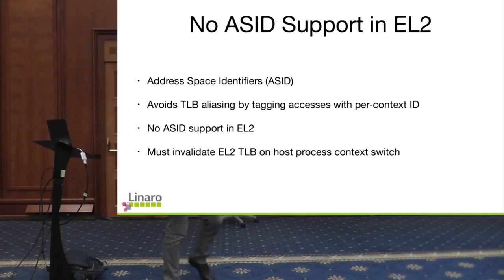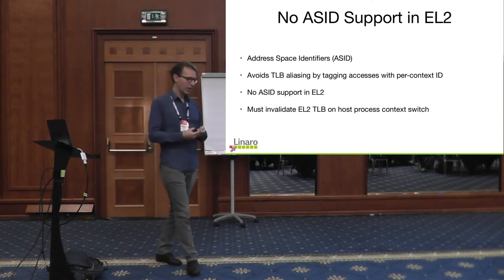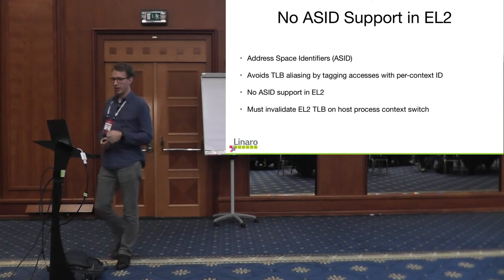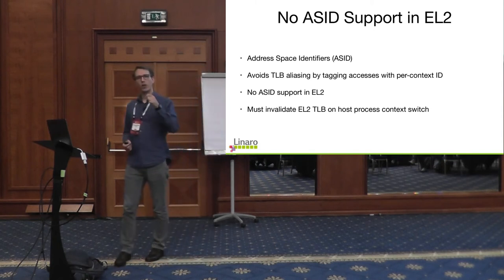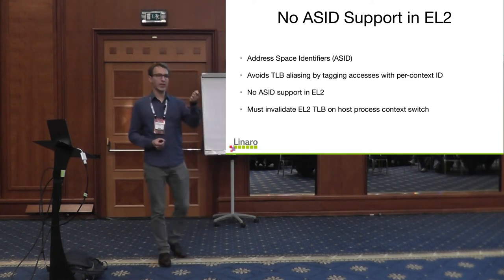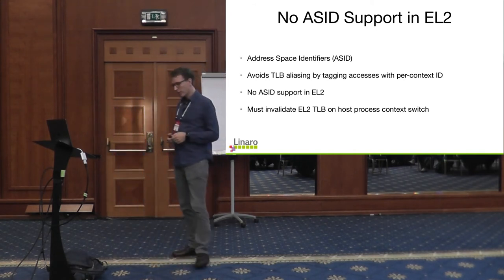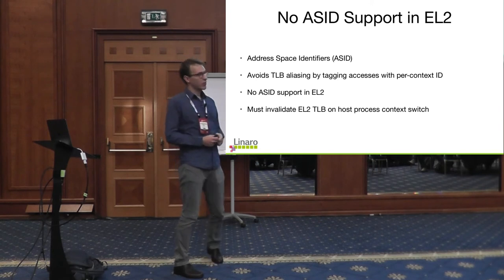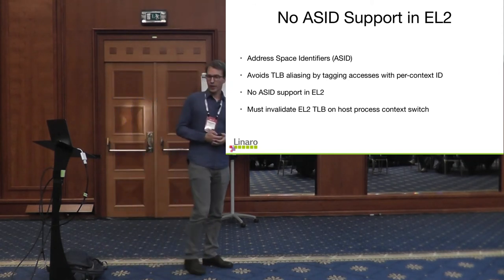Another problem is we don't have ASIDs in EL2. ASIDs are address space identifiers — tags attached to TLB entries to avoid conflicts when multiple virtual addresses map to different physical addresses in different contexts. This isn't a problem for the kernel since it's global across all processes, but when doing get_user or put_user you access user space addresses which can have conflicts. Since EL2 doesn't use ASIDs, you have to invalidate all EL2 entries in the TLB every time you switch a process on the host.